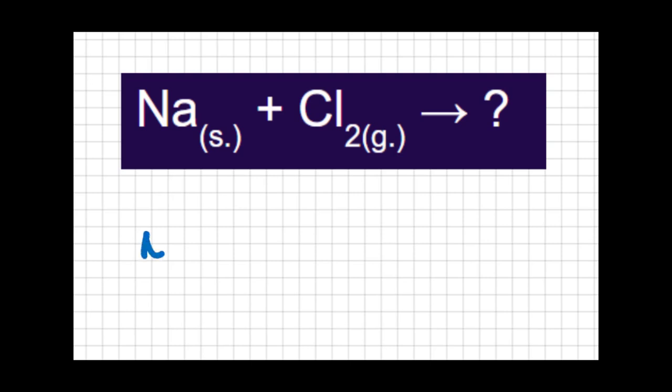When I take Na and react it with chlorine, the product is going to be sodium chloride. Na with a plus one charge and chlorine with a minus one charge just makes NaCl. The problem is that isn't balanced. I have two chlorines on the reactant side, so I'm going to have two chlorines in my product, which means I'm going to need two sodiums as well. So this is a combination reaction producing sodium chloride.